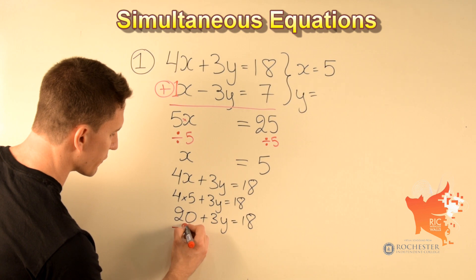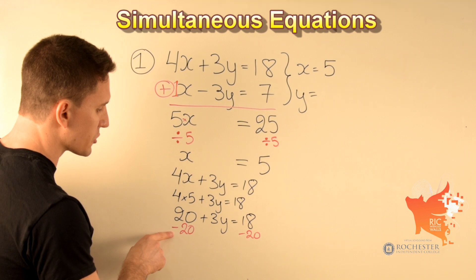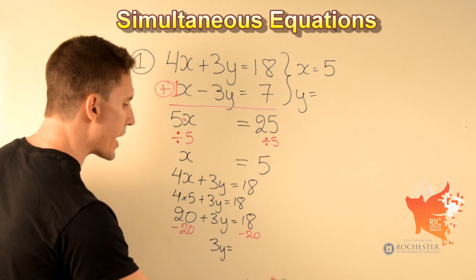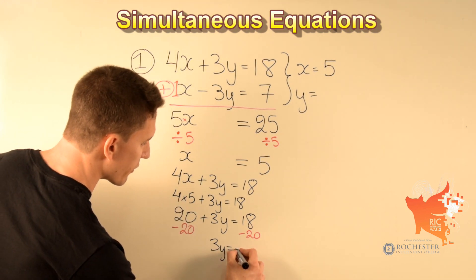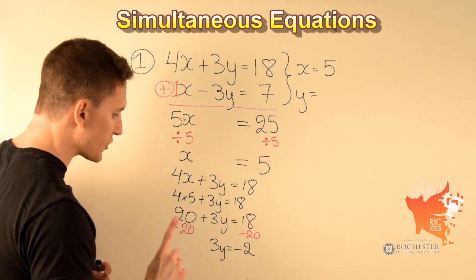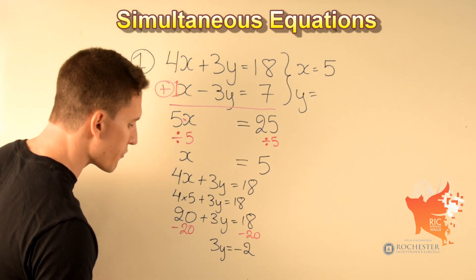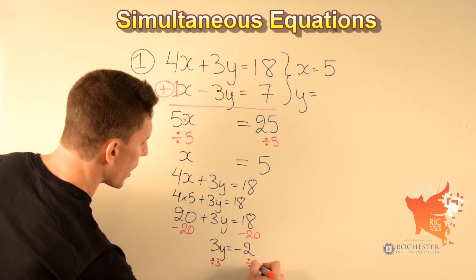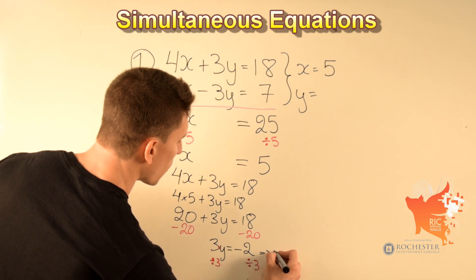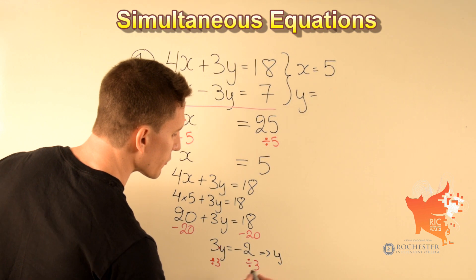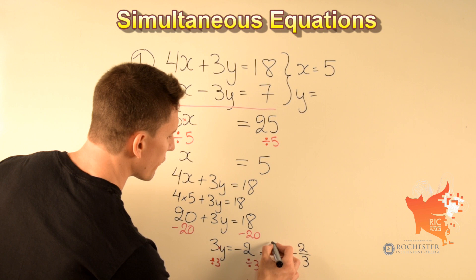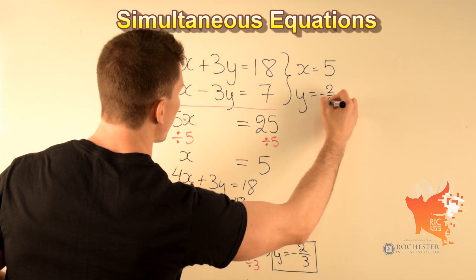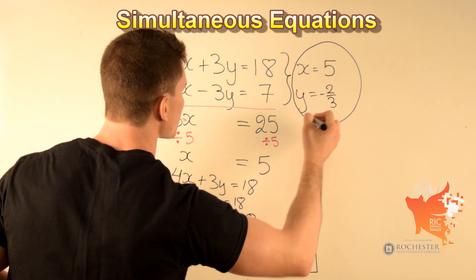We need to subtract 20 from both sides: 20 minus 20 leaves nothing on the left, so we have 3y equals 18 minus 20, which is minus 2. So 3y equals minus 2. To find y, divide both sides by 3. 3y divided by 3 is y, and minus 2 divided by 3 is minus two-thirds. Therefore our final answer is x equals 5 and y equals minus two-thirds.